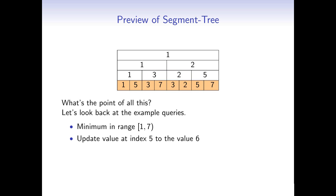Next we wanted to update the value at index 5. We replace the value 2 with 6, but now the parent node has the wrong value — and so does the parent of the parent and so on. So we recompute the parent of 3 and 6 and replace its old value with 3. Then we recompute the parent of 3 and 5, and the parent of 1 and 3 — this time the value was already correct. Finally, for range 3 to 8, instead of iterating over all 5 values, we look at only 2 values and immediately see the minimum is 3.